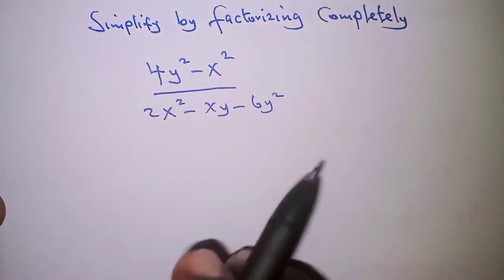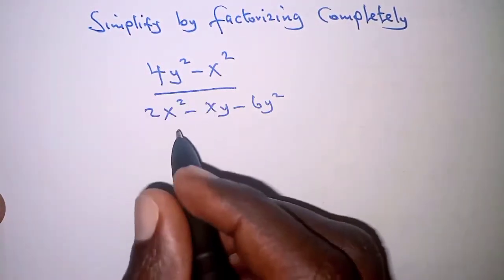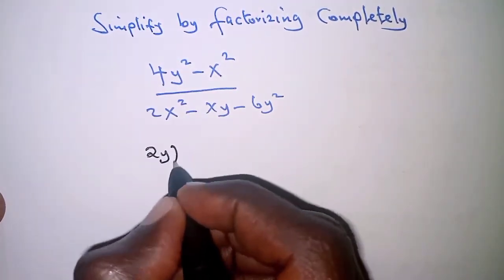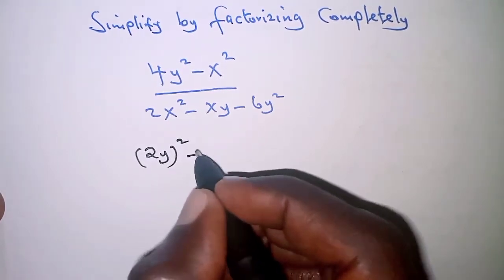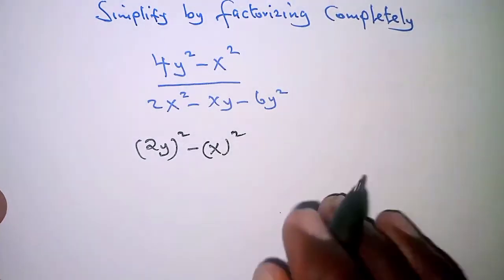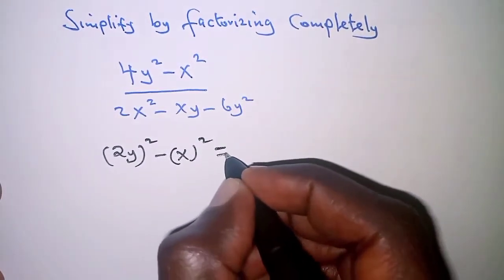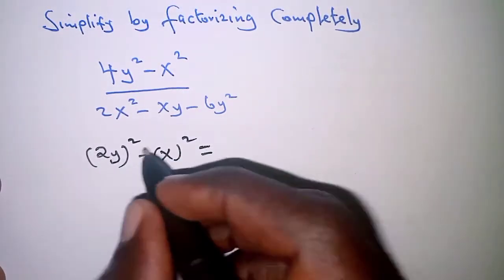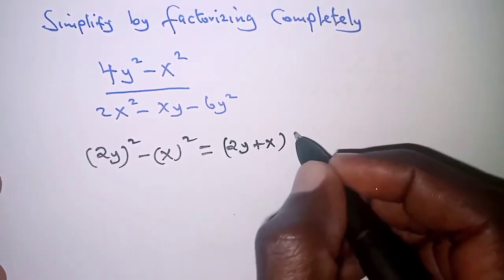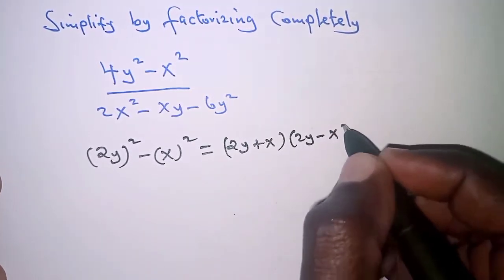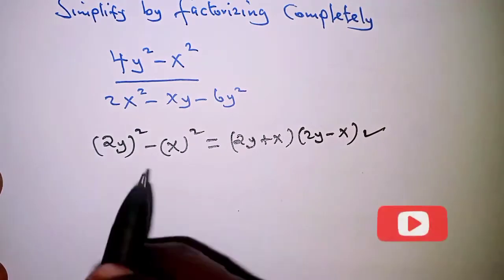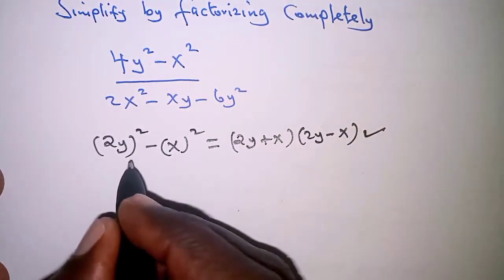On the numerator, we have a difference of two squares: 4y² can be written as (2y)², and x² is also a square. This can be factorized as (2y + x)(2y - x), and therefore we have factorized the numerator. Next, we will factorize the denominator.